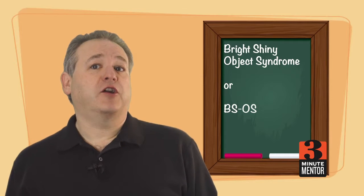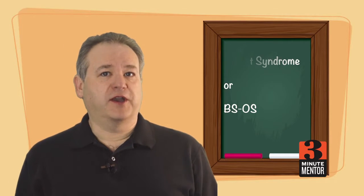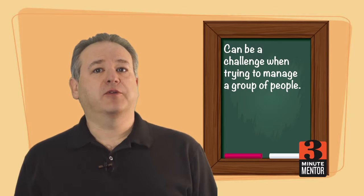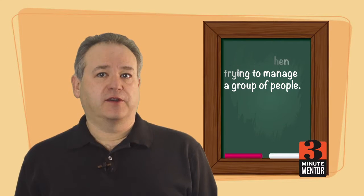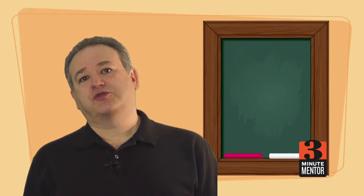Okay, we call this bright shiny object syndrome or BSOS and it's typically a problem when you're trying to manage a group of people who you want to achieve something. This week we're going to look at what it is and how you might manage through it.